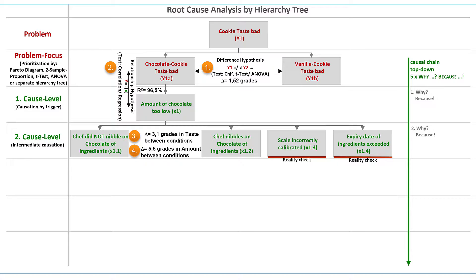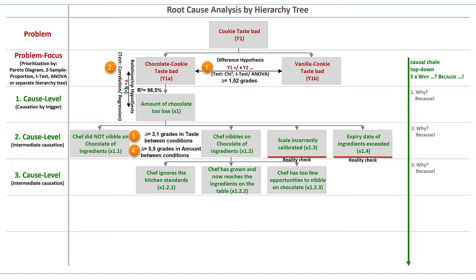And it would be a lot of work for us to collect the necessary data. In practice, it very often happens that no data is available for subordinate levels of the problem cause tree. Therefore, we must now rely on observations and rational analysis from experts to identify the root causes. And our experts name three causes for the chef's nibbling: Chef ignores the kitchen standards, the chef has grown and now reaches the ingredients on the table, and the chef has too few opportunities to nibble on chocolate.